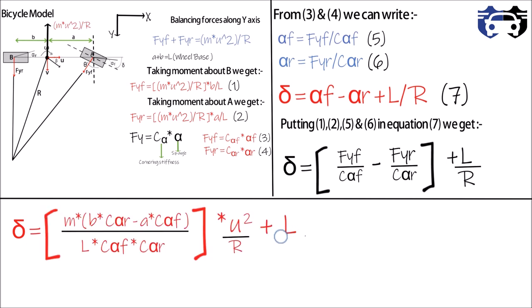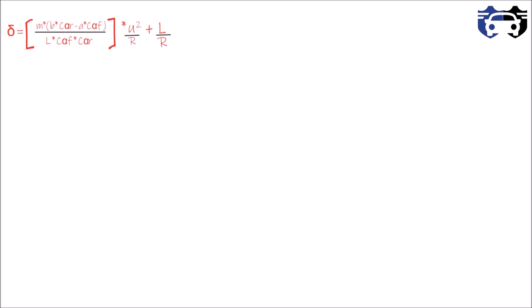So we finally get the value of delta, which is our steering angle. And you can see from the equation that delta is varying with u^2/R, which is your speed of vehicle. Now this is our equation for delta. I'm going to plot the curve between delta and u^2/R.